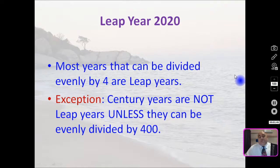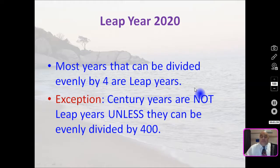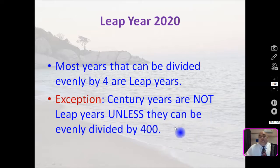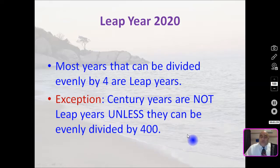Most years that can be divided evenly by four are leap years, and there is an exception. Century years are not leap years unless they can be evenly divided by 400, so it does skip occasionally.